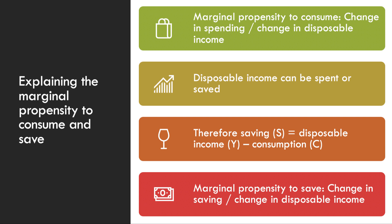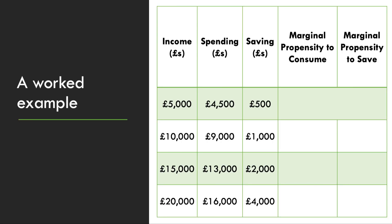This is best looked at by working through a numerical example. Here are four levels of disposable income and some data on how much money people are spending in pounds. What's left is saving, so columns two and three should add up to the income column on the left. For the first change: when income goes up from £5,000 to £10,000, people are spending £4,500 of that increase — spending 90% of any increase in income. Therefore the marginal propensity to consume is 0.9 and the MPS must be 0.1. Those two figures must always add up to one, because disposable income can be spent or saved.